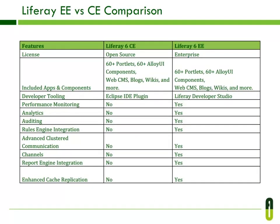Liferay Portal comes with two versions. One is the commercial version called Liferay Portal Enterprise Edition, and the second is the standard version called Liferay Portal Community Edition. Liferay Portal EE is made available via an enterprise subscription with up to 365x24x1 hour phone support. Basically, as per portlets and components, there is no difference between both versions. In Liferay Enterprise Edition, developers can use Liferay Developer Studio, while in Community Edition they provide a plugin for Eclipse IDE. Liferay Enterprise Edition also supports analytics, performance monitoring, advanced clustered communication channels, report engine integration, and enhanced cache replication, etc.